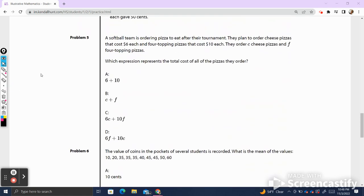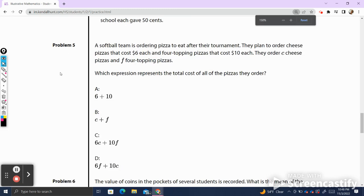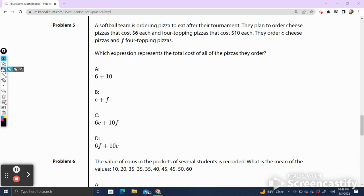Problem number five. A softball team is ordering pizza to eat after their tournament. They plan to order cheese pizzas that cost $6 each and four topping pizzas that cost $10 each. They order C cheese pizzas and F four topping pizzas. What is the expression that represents the total cost of all the pizzas they order? Well, if they order C cheese pizzas and the cheese pizzas cost $6 each, that's going to be the total cost of the cheese pizzas. We're going to have to add the cost of the four cheese pizzas, which are each $10. So we're going to say 10 times the number of four cheese pizzas they have represents the expression for this pizza. My answer is number C.